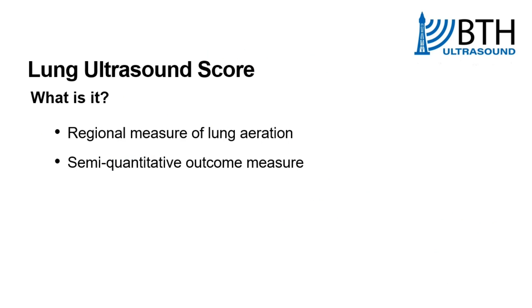Lung ultrasound is a regional measure of lung aeration. You scan different zones on the thorax and you attribute a score to each area. It's a semi-quantitative outcome measure, so you can use it to track changes in the lung aeration through the score process itself.